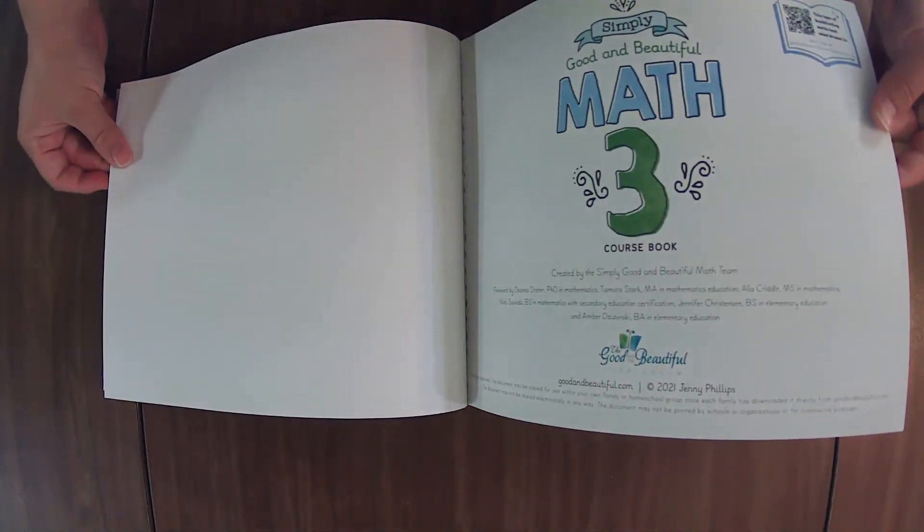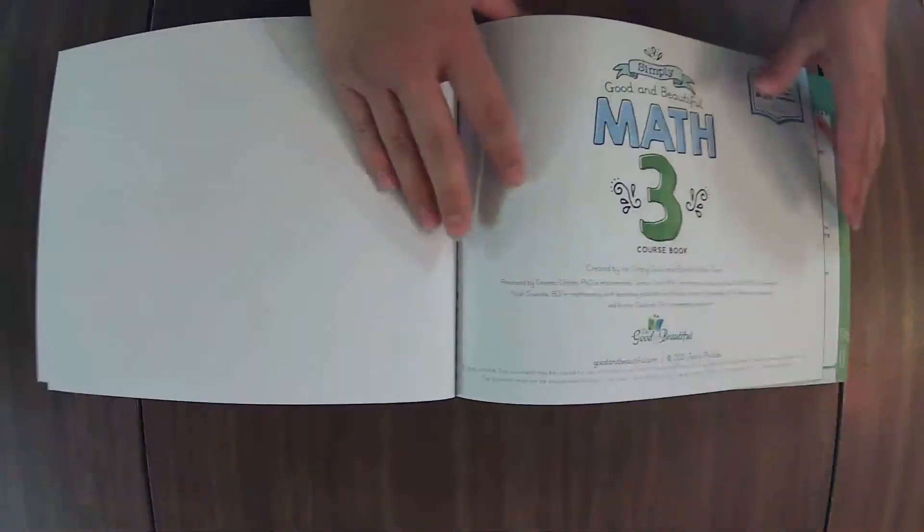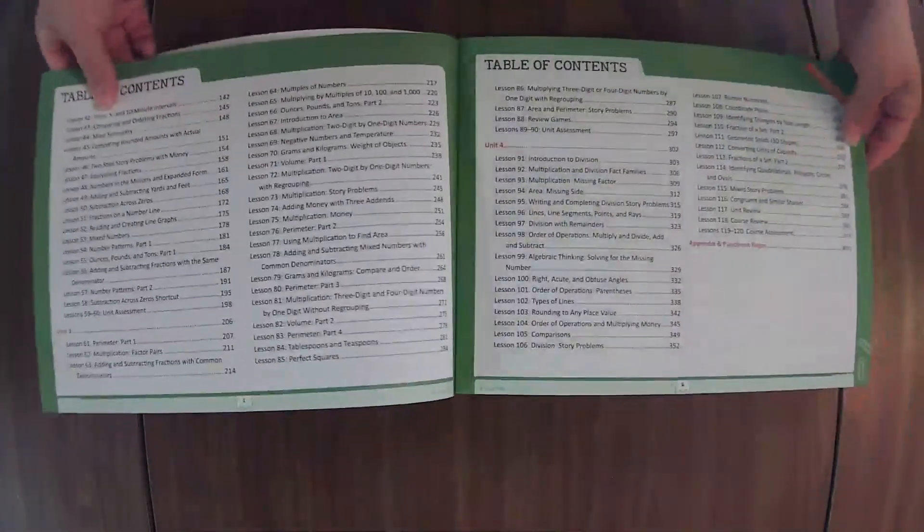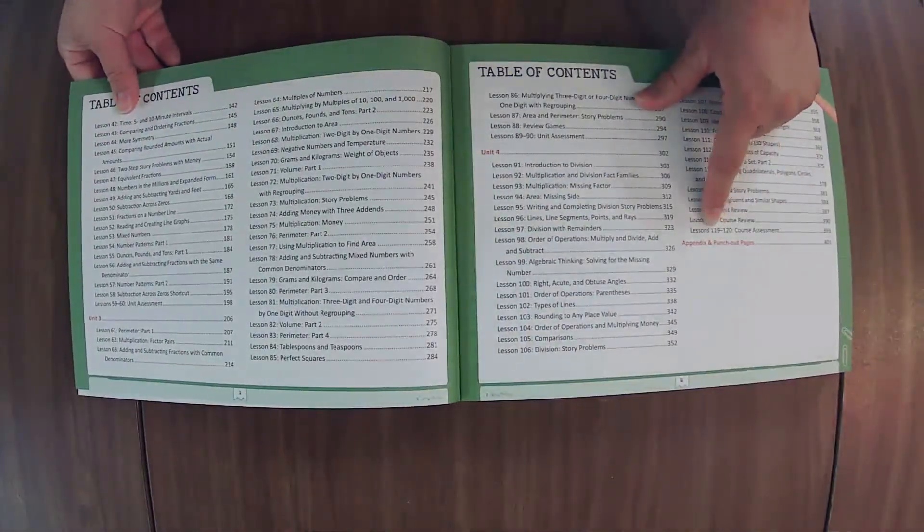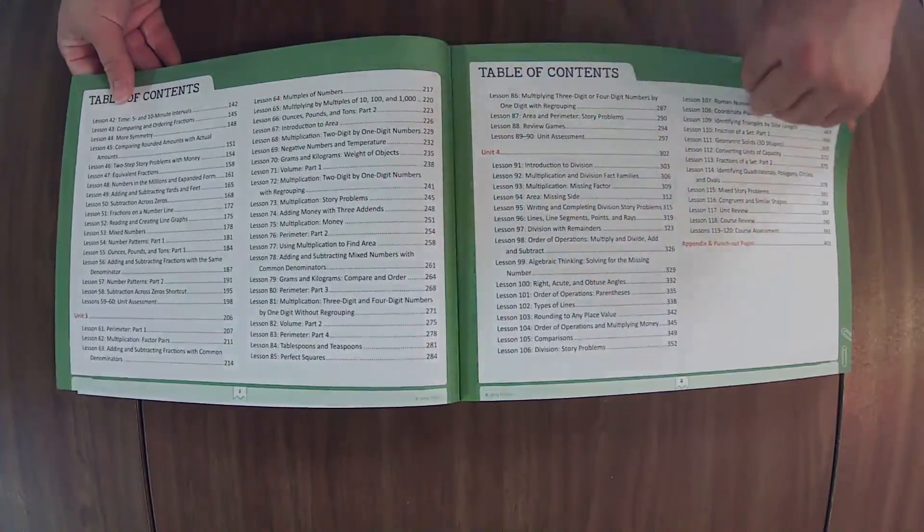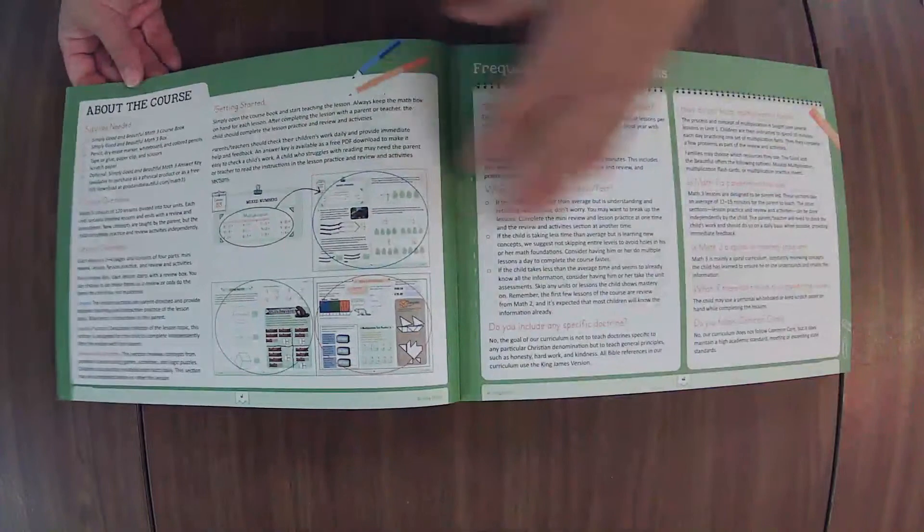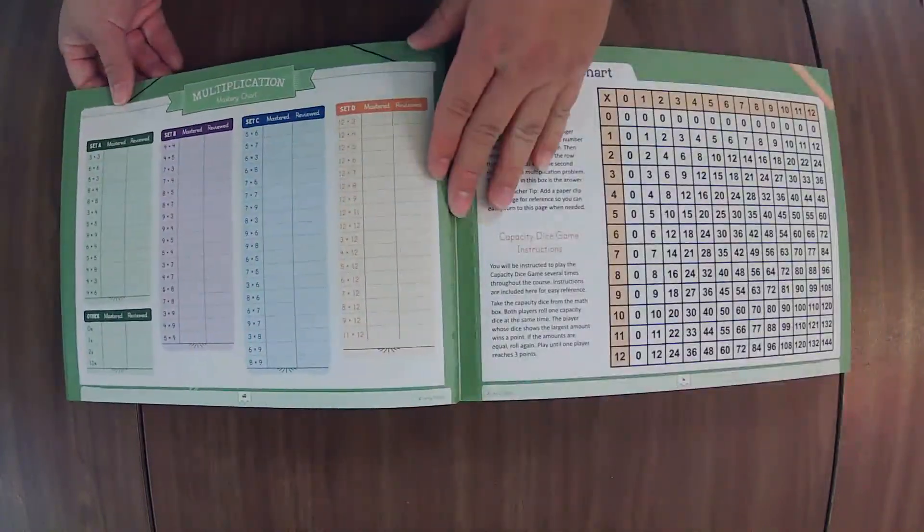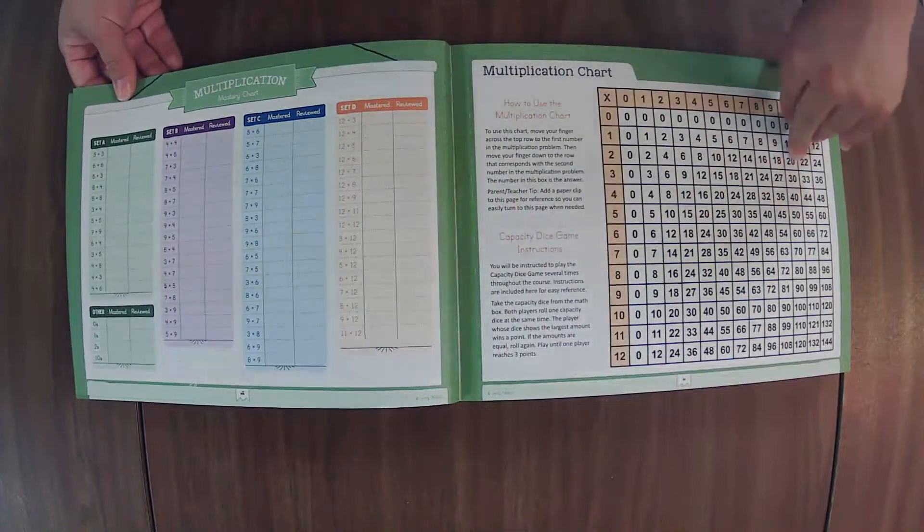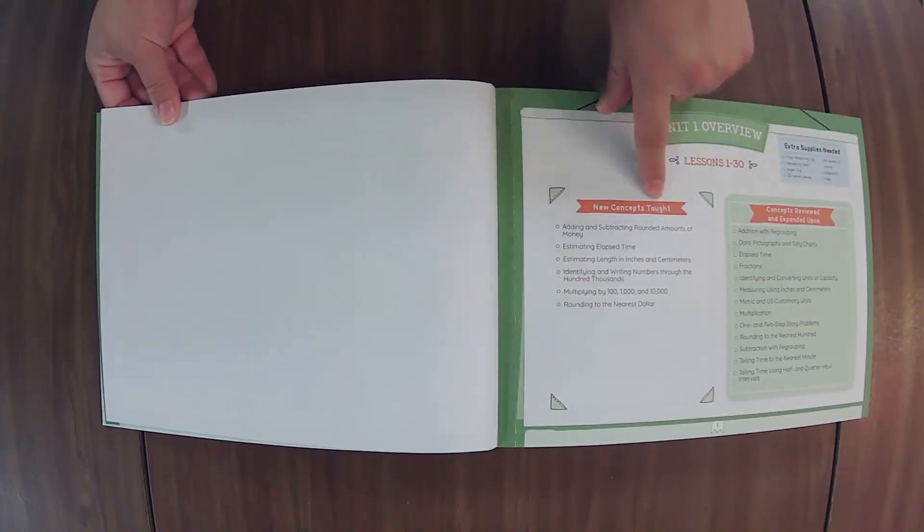This is where it talks about the binding. It works best when broken in, so when you first get it, kind of open it up, push it down to help it get broken in so that it lays a little flatter for you. Okay, table of contents. This course has 120 lessons, and we'll cover how those course assessments go. That's four units, and here's some reference pages. Multiplication chart, mastery chart so you can keep track of what ones they have mastered.